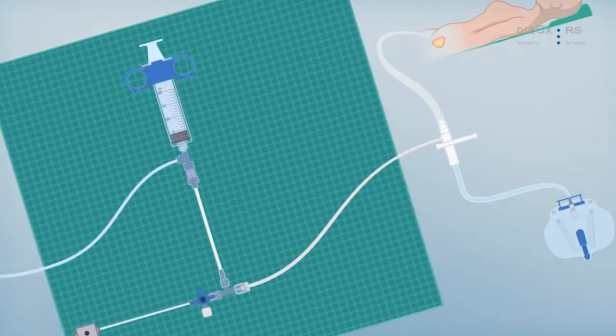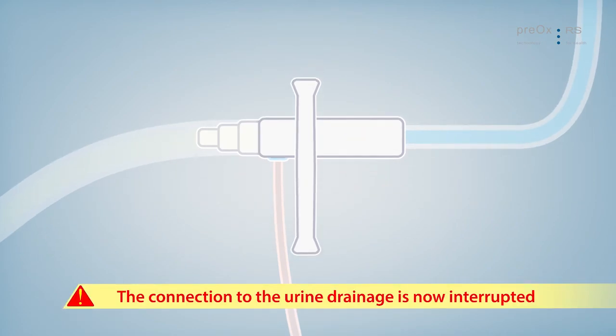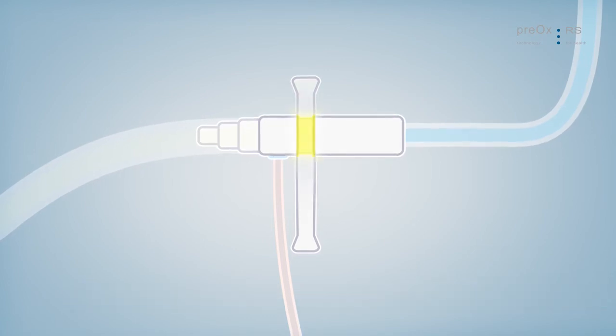Now perform the measurement. Interrupt the urine drainage by closing the white clamp of the IAP adapter. Make sure the clamp is in the foreseen notch.